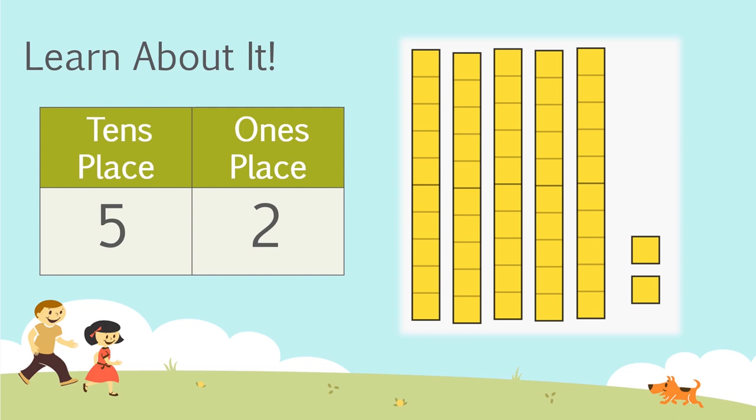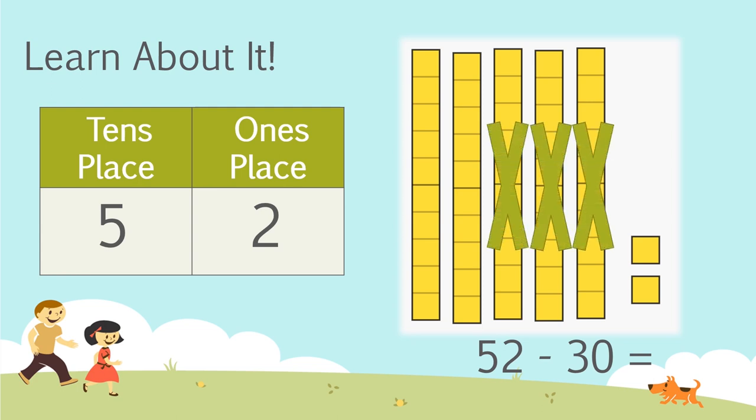Let's take a look at how we can use this with subtraction. What if we had 52 minus 30? We know that we aren't adding anything because we are subtracting. In fact, we are taking away three groups of ten. Does this change anything about our ones place? No, it doesn't. So what is five tens minus three tens? That's right, two tens. And then if we add back our two that we already had, we are left with 22.